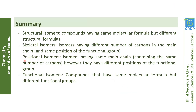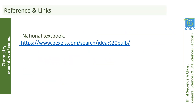To summarize: positional isomers are isomers having the same main chain and same number of carbons in the main chain, but different positions of the functional group. Functional isomers are compounds with the same molecular formula but different functional groups. Thank you.